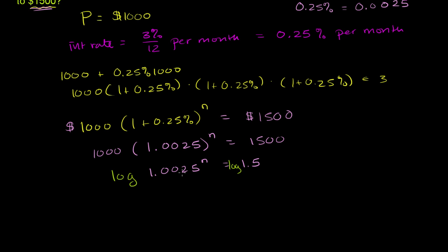Log of 1.0025 to the n, that's the same thing using our logarithm properties. We can take that n and bring it out front. That's the exact same thing as n log of 1.0025. And then to solve for n, we can just divide both sides by log of 1.0025.